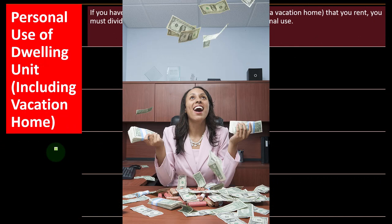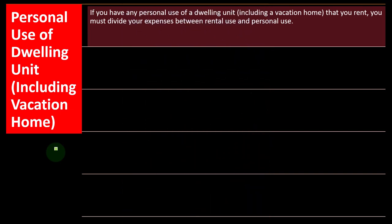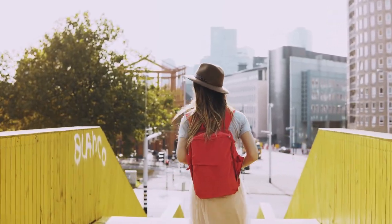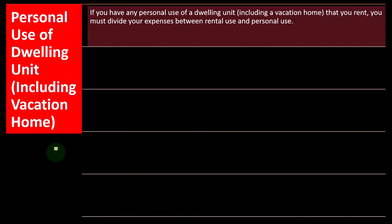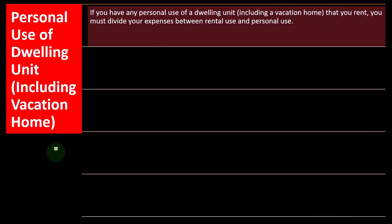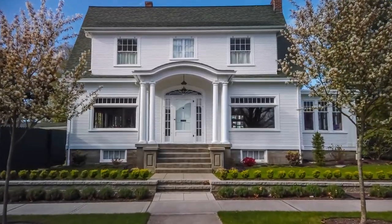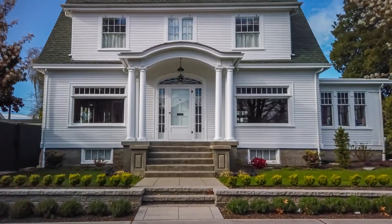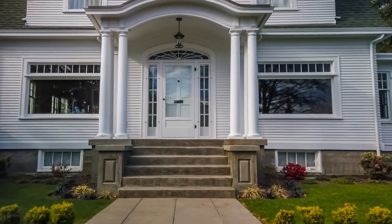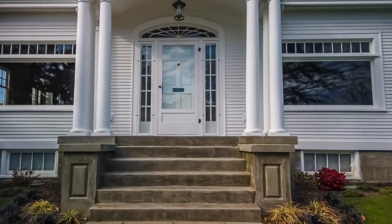Personal use of a dwelling unit, including the vacation home. We've taken a look at scenarios where rental property is designated 100% as rental. Now we want to consider situations where we can't avoid some co-mingling of personal and rental, where we have to think about how we're going to break out personal and rental use — and there are a few general scenarios where this comes up.